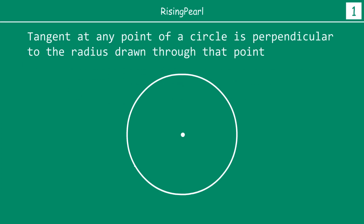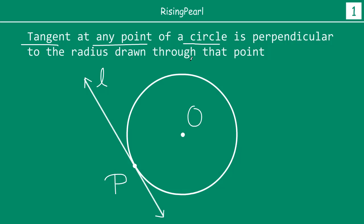Let's first look at the theorem by drawing a circle. I have drawn a circle — let's call the center uppercase O. We draw a tangent: line L is a tangent drawn to the circle with center O. The definition of a tangent is that it touches a circle at one and only one point. In this case, that point is P. The theorem tells us that the tangent at point P is perpendicular to the radius drawn through that point. If we join O and P, that gives us the radius through point P, and this angle must be 90 degrees.